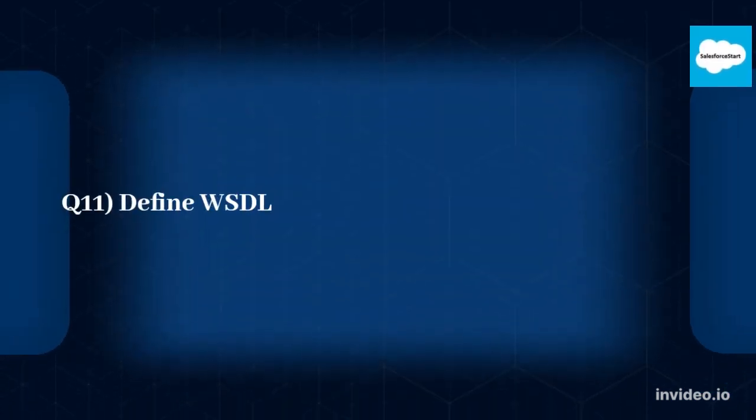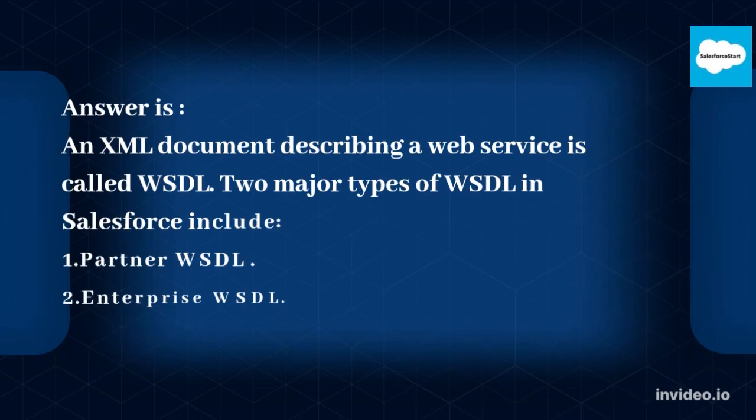Q11: Define WSDL. An XML document describing a web service is called WSDL. Two major types of WSDL in Salesforce include: 1. Partner WSDL, 2. Enterprise WSDL.